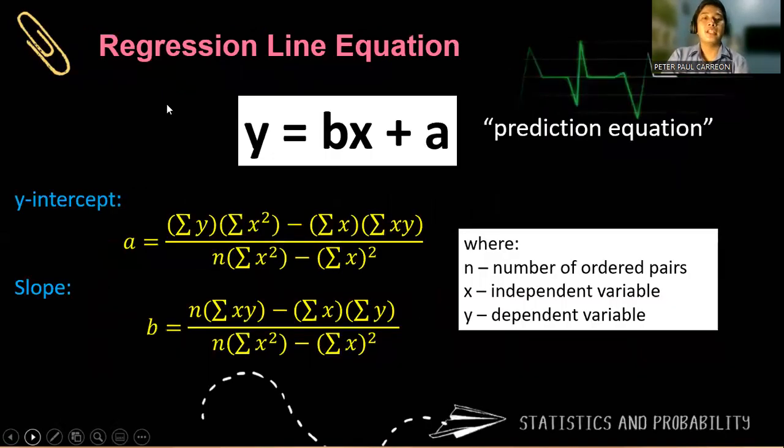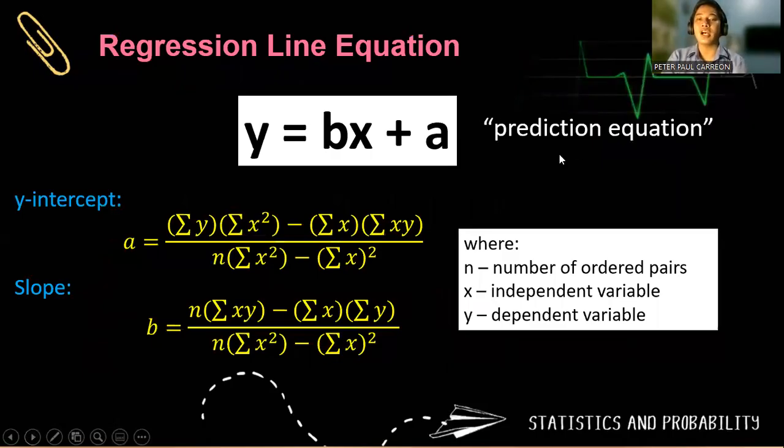So the regression line equation is actually a prediction equation. Always remember that b is our slope, and a is our y-intercept. And there are ways in solving for a.